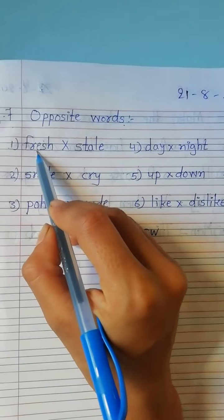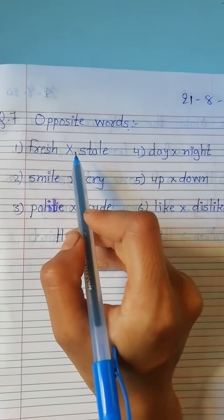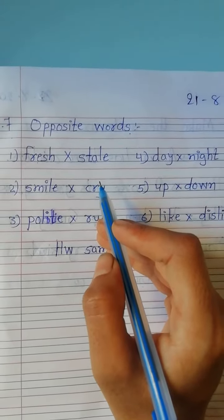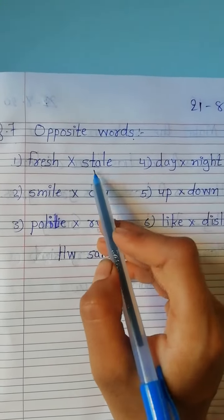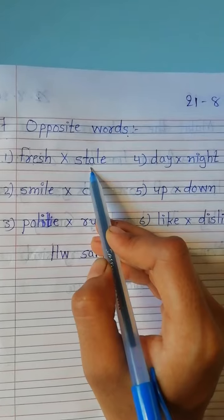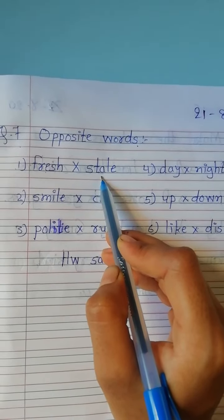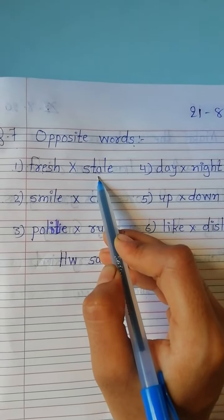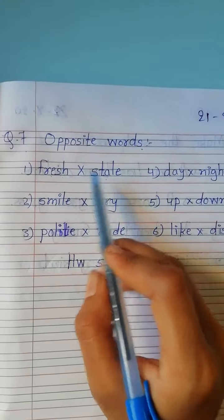First, Fresh. Fresh means recently new, it is called fresh and stale. Stale means like we make pizza yesterday, so that pizza is stale. So, fresh opposite is stale.